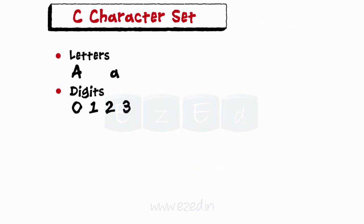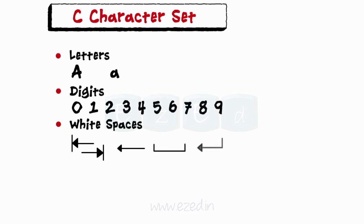Digits ranging from 0 to 9. White spaces which include horizontal tab, carriage return, blank space, and new line.